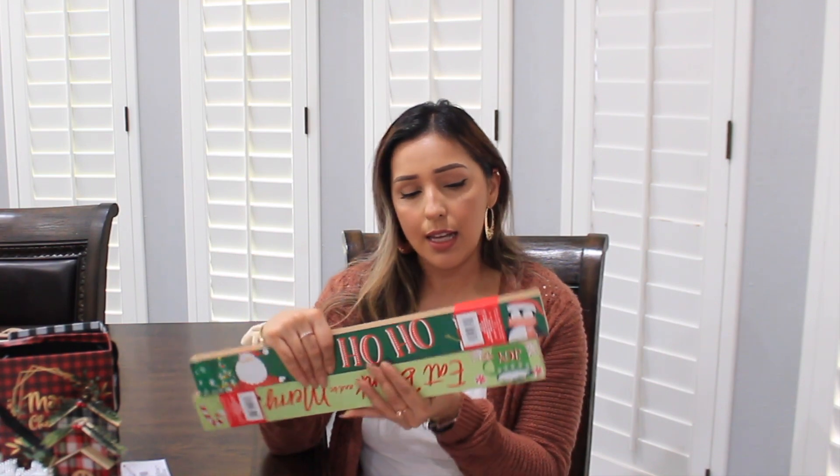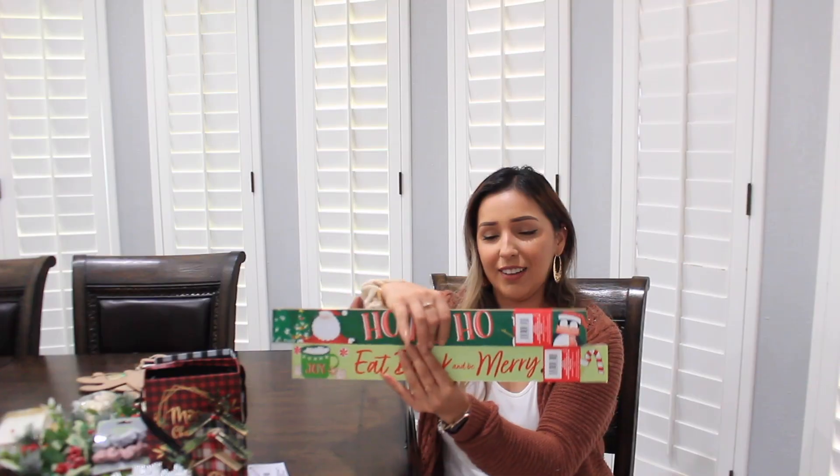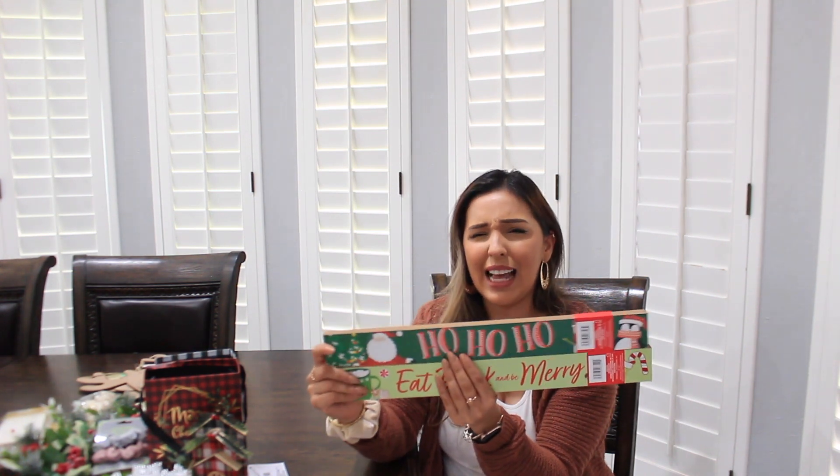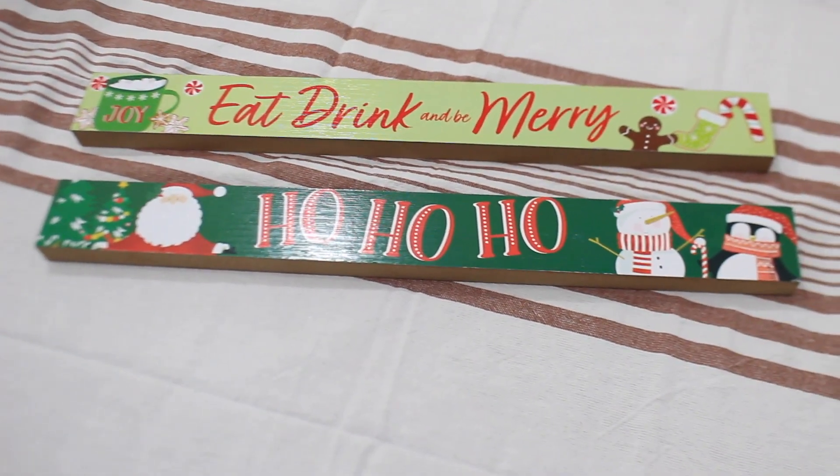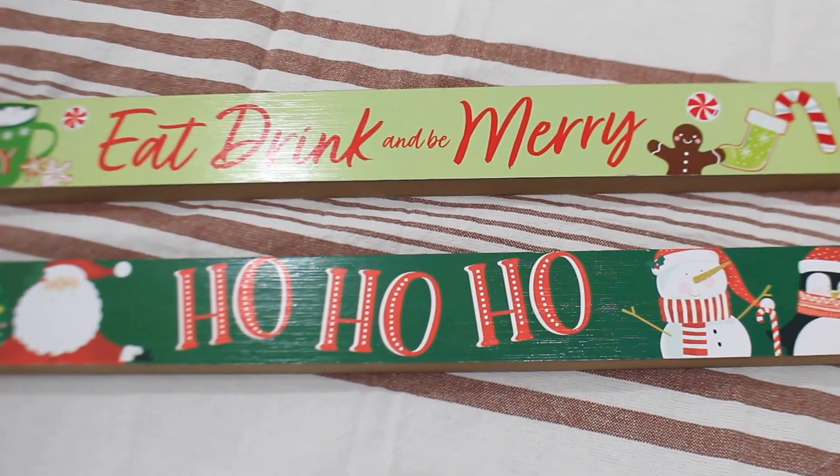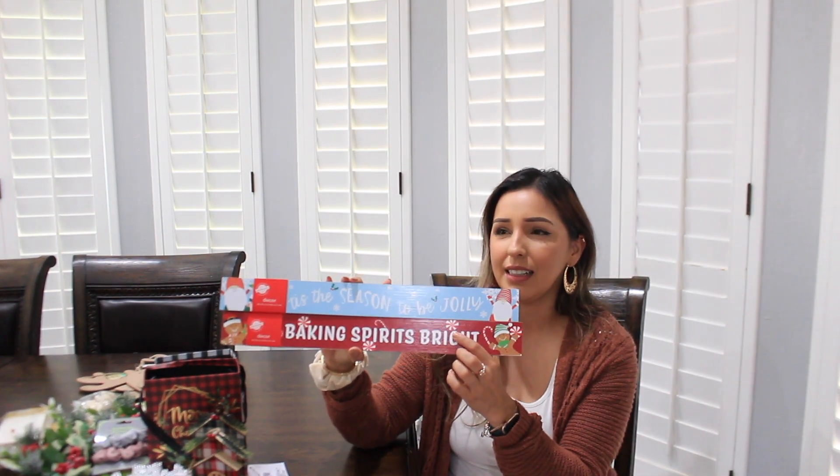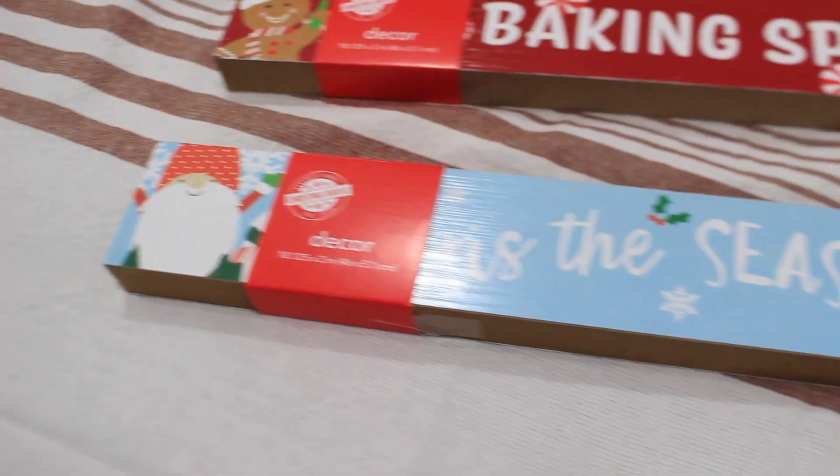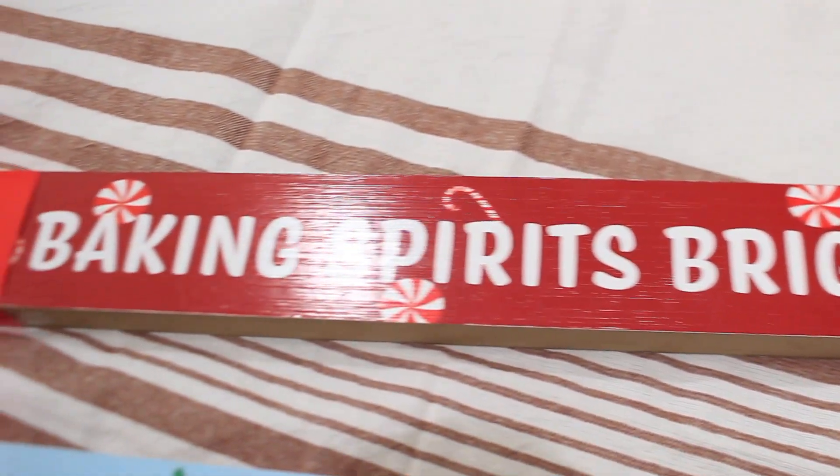So I also picked up a couple of these famous signs that we always get at Dollar Tree. And they're two-sided. Let's see, I have one upside down. So I picked up two and I think they had like four different kinds. So they have this one side and then they also have this other side. So I thought that was really cool. Not sure if I'm going to use them as is. Maybe this one. I really love that candy cane, peppermint type theme for my coffee area or do some DIYs with these.